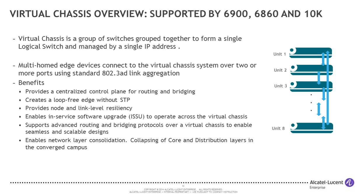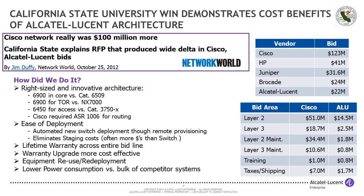Speaking of that kind of network, let's talk about California State University — a major and very public win for Alcatel-Lucent Enterprise. You can Google 'Alcatel-Lucent CSU' and you'll find this story in your top hits. It was a real wake-up call that there are now alternatives to the traditional Cisco Nexus and Catalyst three-tier architecture. In this opportunity, Alcatel-Lucent ended up being $100 million cheaper, and Network World wrote a series of articles to explore why.